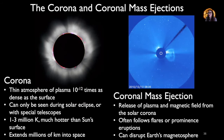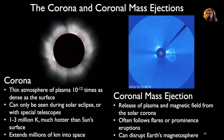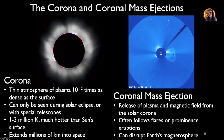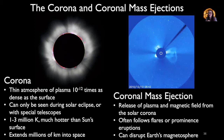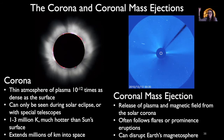Next we're going to talk about the corona and coronal mass ejections. The corona is the thin atmosphere of the sun — 10 to the minus 12 times as dense as the surface — and this is what we see during a solar eclipse. The temperature in the corona can reach one to three million degrees Kelvin, which is remarkable because the surface of the sun is only about 6,000 Kelvin. So even as temperature decreases from the sun's core to the photosphere, once we pass the photosphere, temperature starts to increase again — which we think has a lot to do with magnetic fields in the corona.